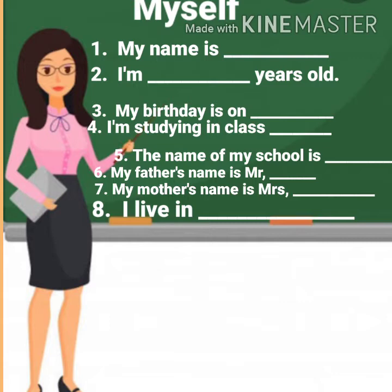Number three: 'My birthday is on dash' — mention your birthday, meaning your date of birth. Number four: 'I am studying in class dash.' If you are studying in LKG A, you have to say 'I am studying in class LKG A,' or if you are studying in LKG B, you have to say 'I am studying in class LKG B.'